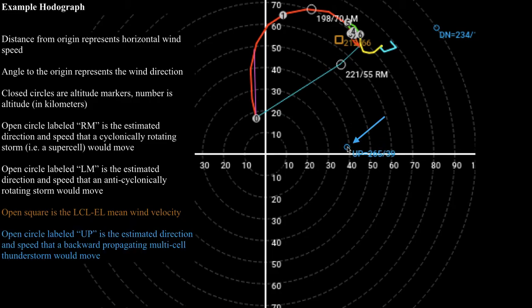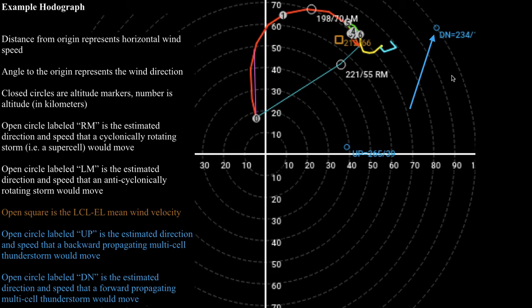The open circle labeled UP is the direction and speed that a backward propagating multicell would want to move in this wind field. In this case, a backward propagating multicell would want to move almost easterly at a speed of roughly 40 knots, about 50 miles per hour. The downshear vector, the open circle labeled DN, represents the speed and direction that a forward propagating multicell would want to move — giving you an idea of how fast a squall line would be moving. In this case, the estimate is for the squall line to move at about 100 knots, or around 110 miles per hour, in an east-northeasterly direction.